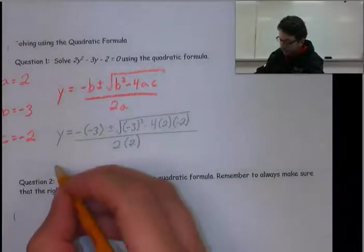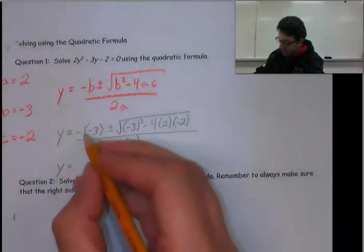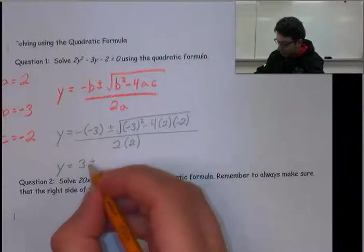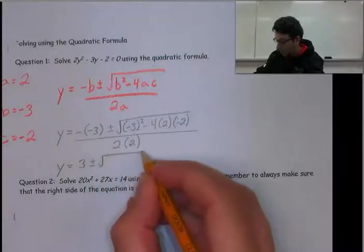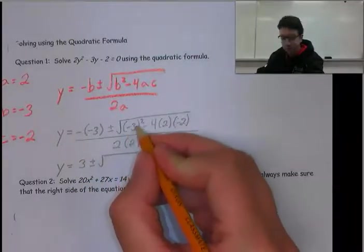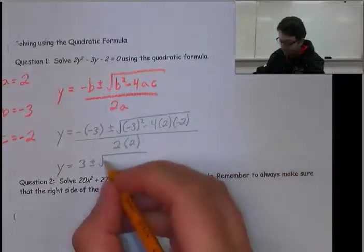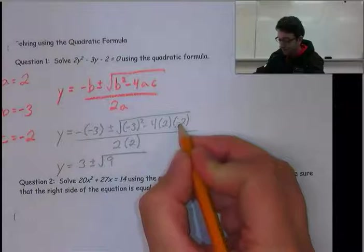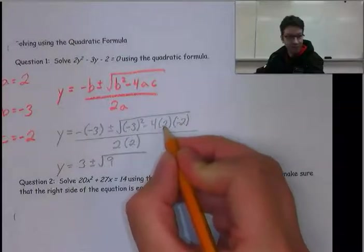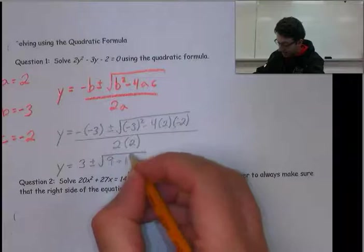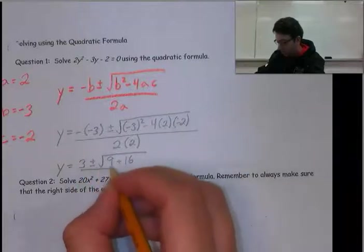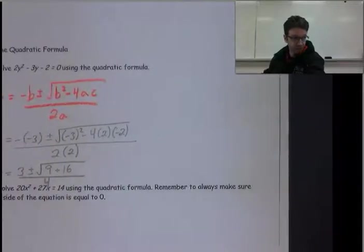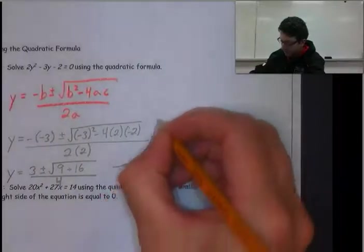Now we're just going to simplify. We're finished our substitutions, so this is 3 plus or minus the square root of (-3)² is 9. Here we have a double negative, so that's positive. 4 × 2 = 8, times 2 again is 16, all divided by 2 × 2 is 4.